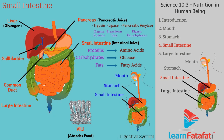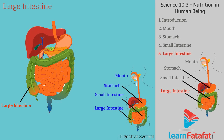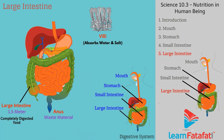The unabsorbed food is then sent to the large intestine, which is about 1.5 meters long. The walls of the large intestine have villi which absorb water and salt from the digested food. The waste material is then removed from the body through the anus.